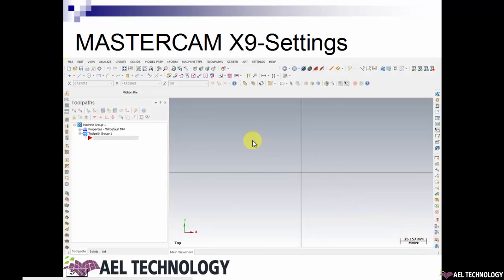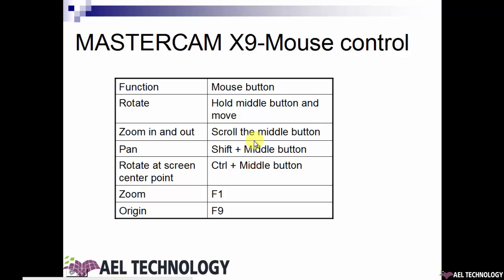Now let's look at some mouse controls. If you want to rotate a solid body or geometry, hold the middle button and move your mouse. If you want to zoom in and out, scroll the middle button. If you want to pan the image, hold Shift and press the middle button while moving the mouse. And if you want to rotate the screen at a particular center point, press Control and the middle button and move the mouse.